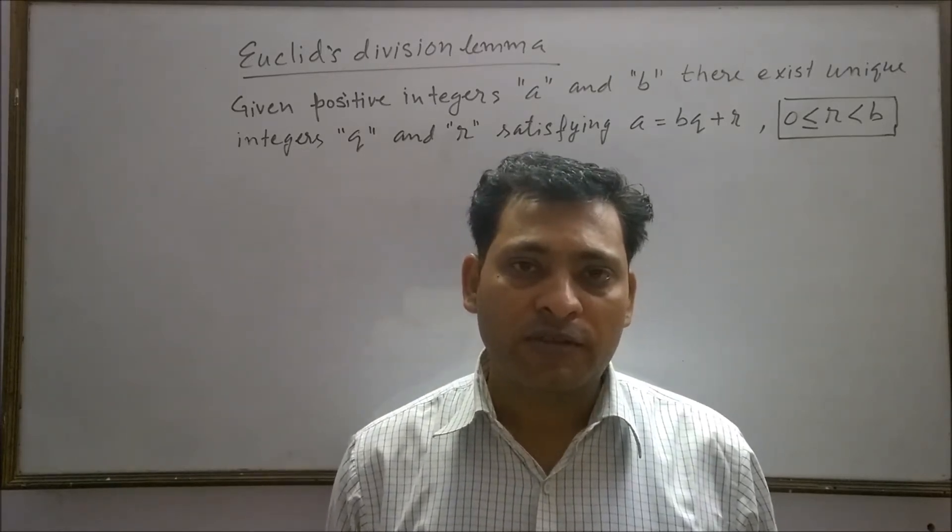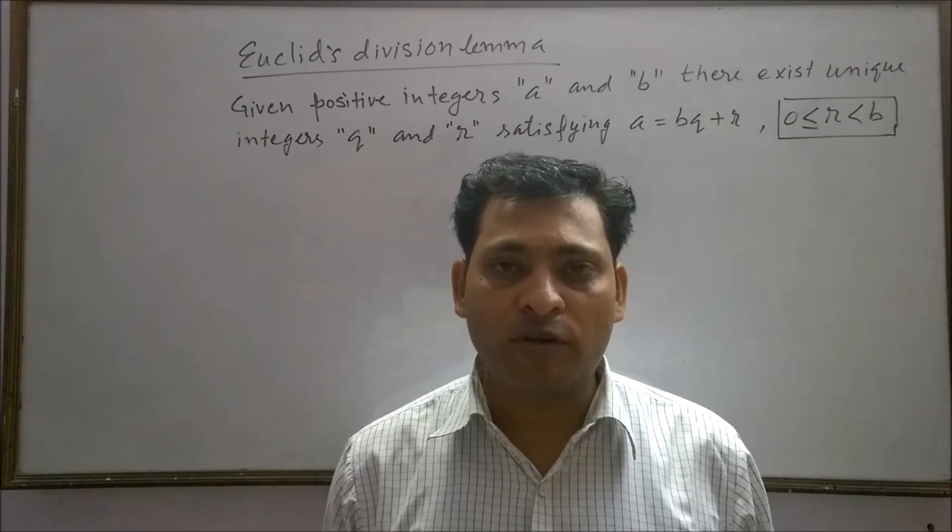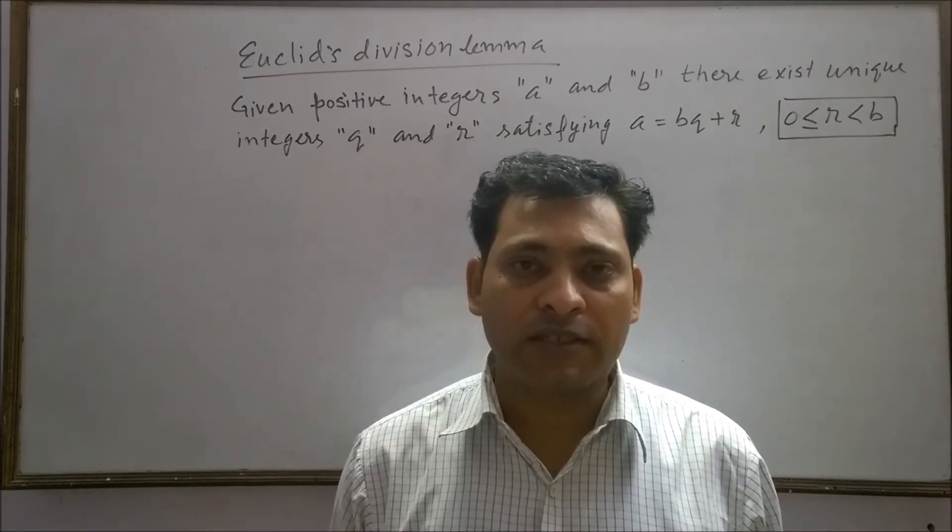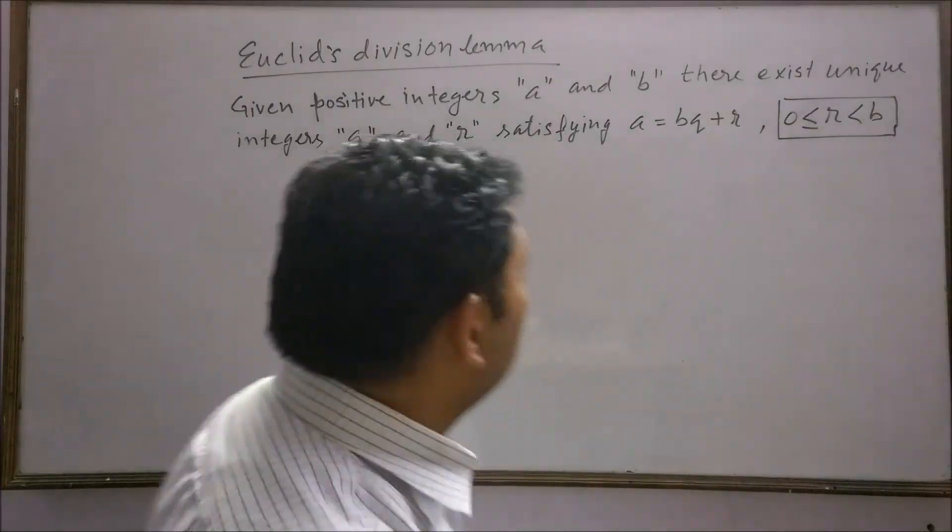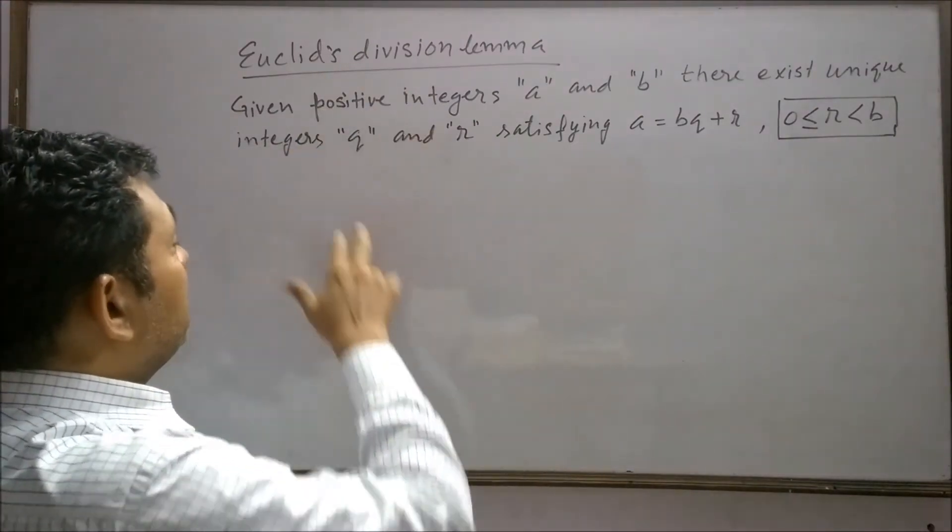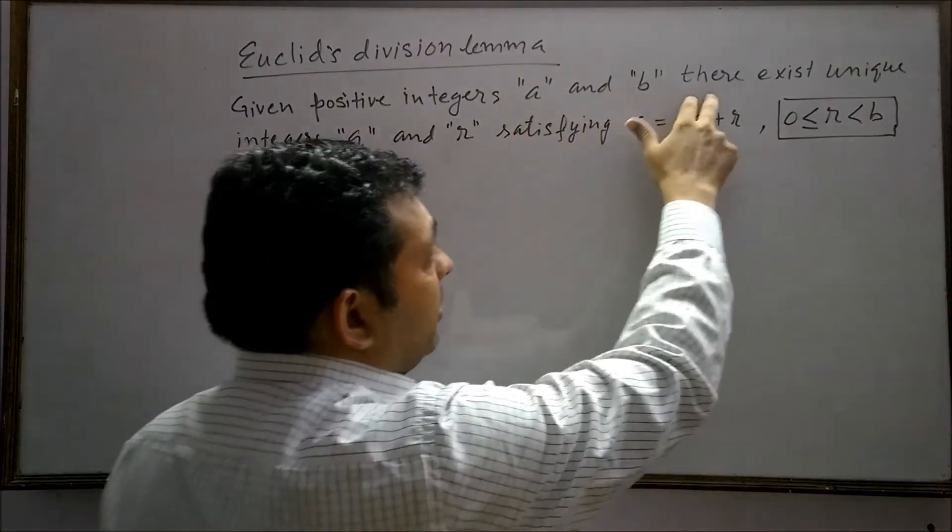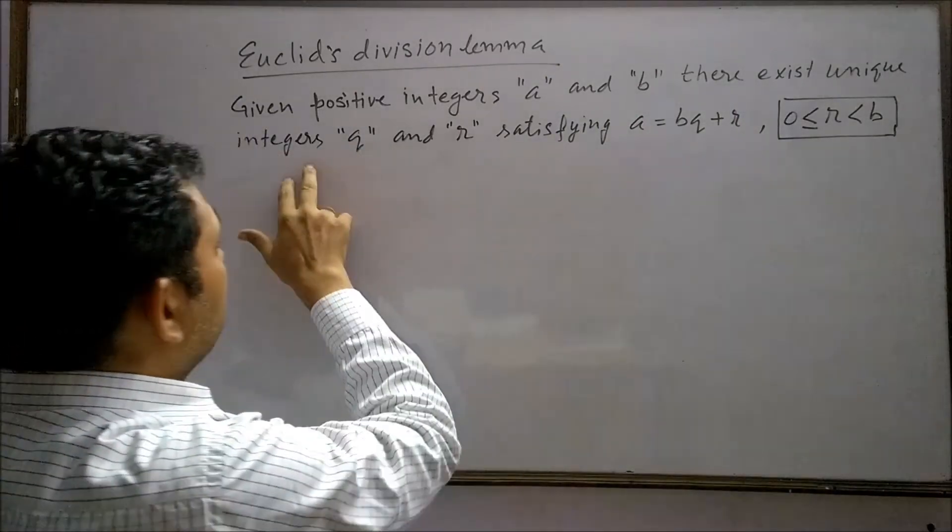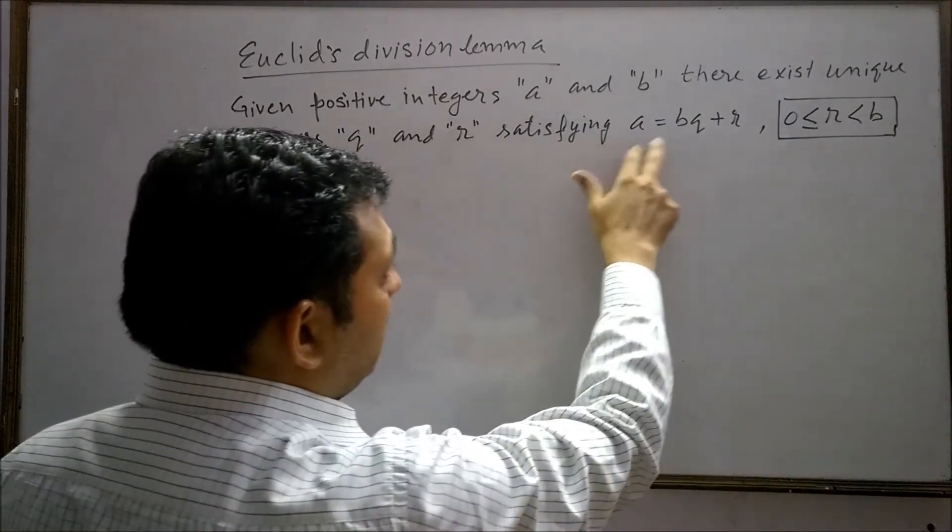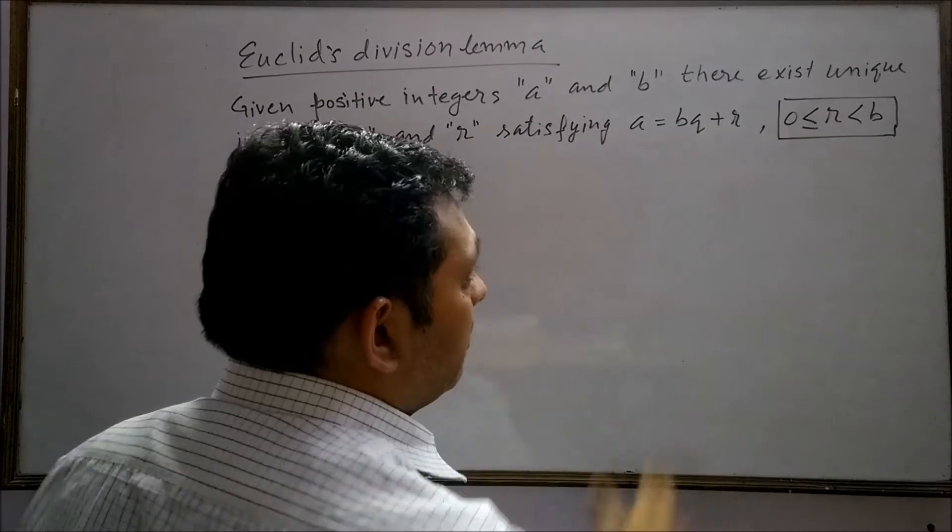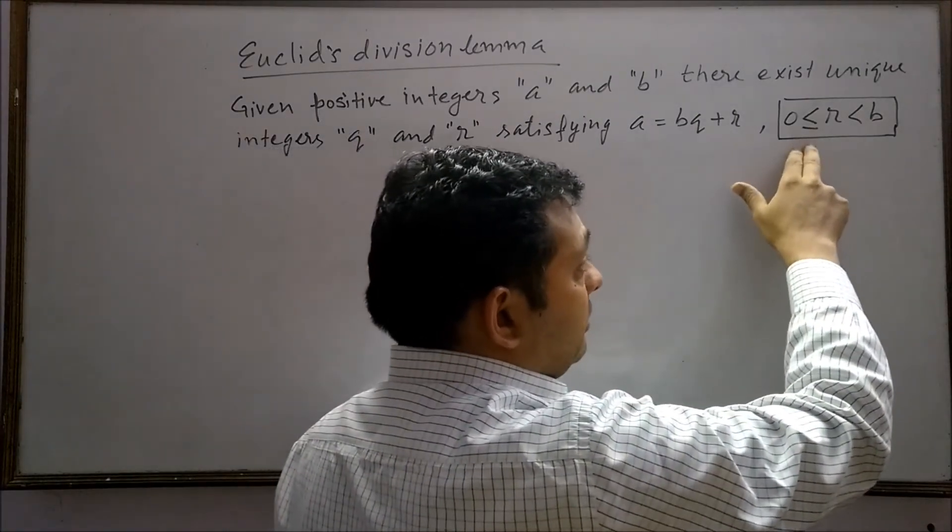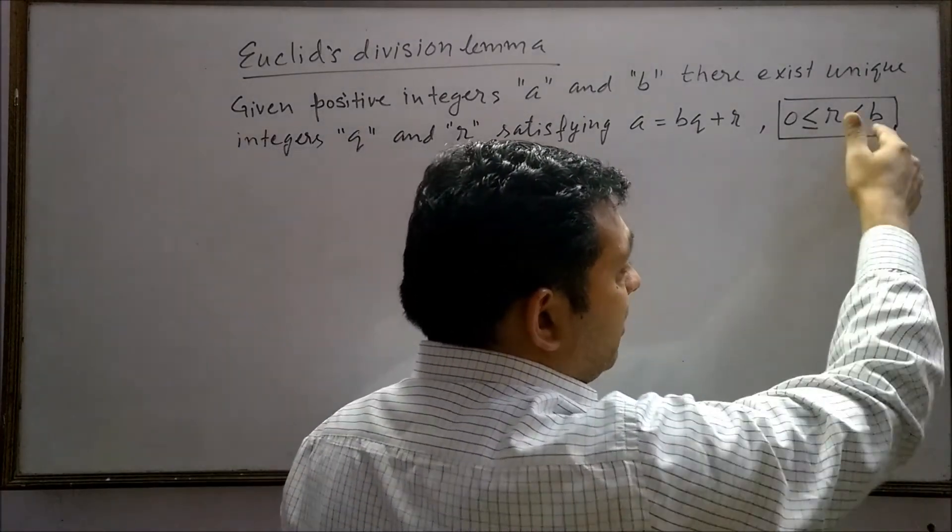In today's lecture student, I am going to discuss a very important topic, Euclid Division Lemma of Class 10th. Euclid Division Lemma states that given positive integers a and b, there exist unique integers q and r satisfying a equals bq plus r, where r is greater than or equal to 0 but less than b.